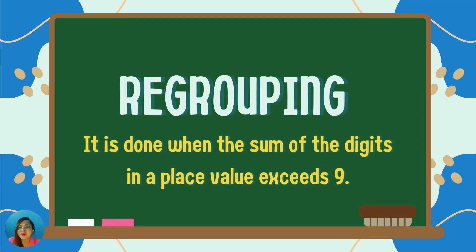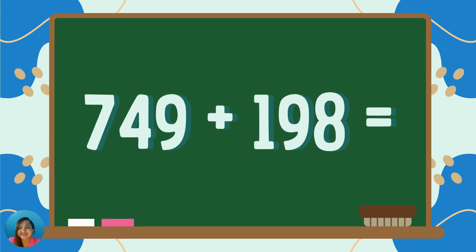Alright! Sometimes when we add numbers, we need to regroup. Do you agree? Yes! Regrouping is done when the sum of the digits in a place value exceeds 9. Let us study this example.